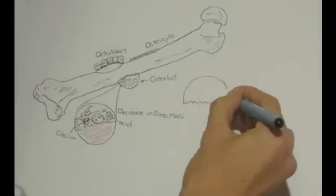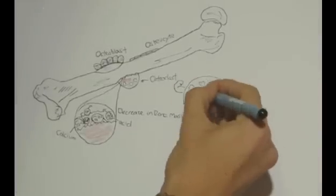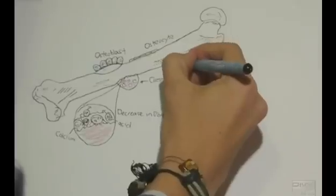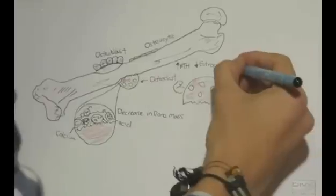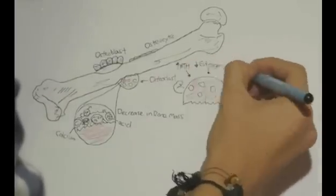The increased rate of osteoclast activity can be determined by a variety of factors, including hormones such as parathyroid hormone and estrogen, vitamin D, and medication such as glucocorticoids.